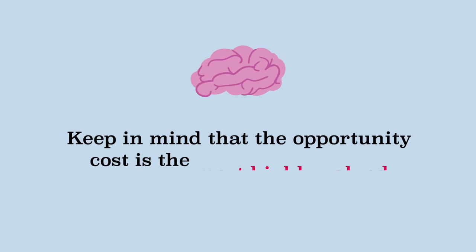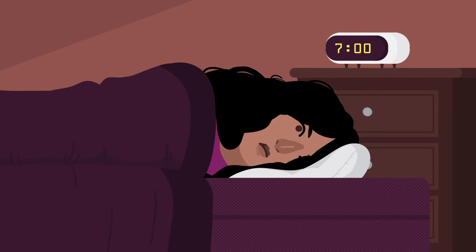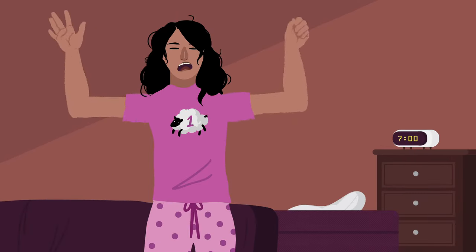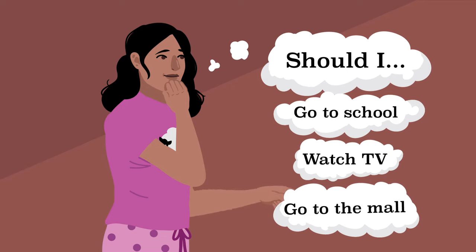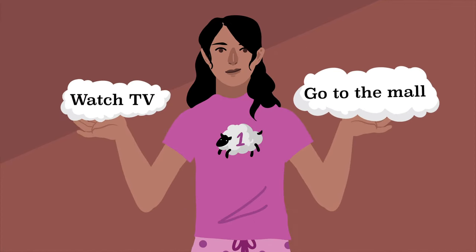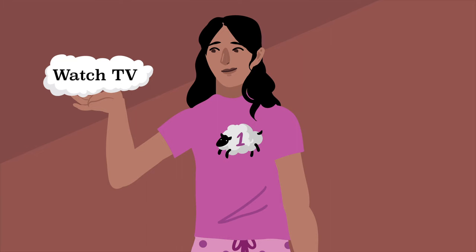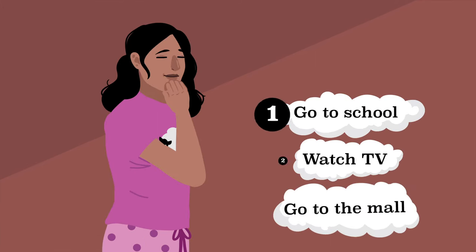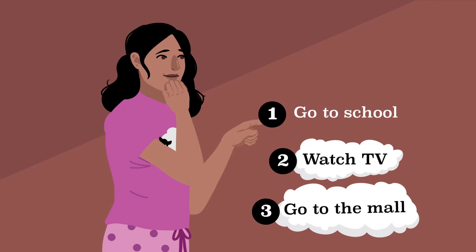Keep in mind that the opportunity cost is the most highly valued opportunity given up. When your alarm went off this morning, you had a number of options open to you. Assuming that you first chose to get out of bed, you could have chosen to go to school, watch TV, or go to the mall. What is the opportunity cost of going to school? Is it both watching TV and going to the mall? No. Because of the scarcity problem, you would have only been able to do one of those options if you weren't at school. So you were only giving up the opportunity to do one of them — the one you were most likely to do. If you were to place a value on your choices, you would choose the activity you valued most, which was go to school. Your opportunity cost would be the one on which you place the next highest value, probably watching television.